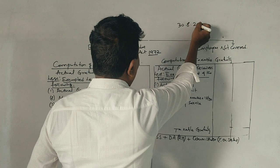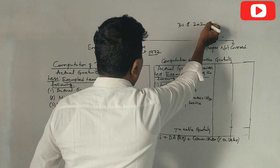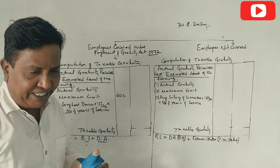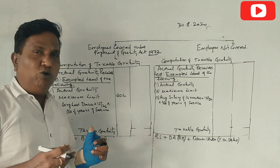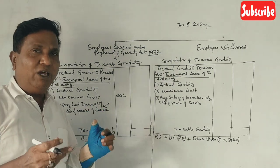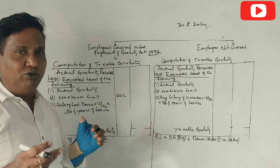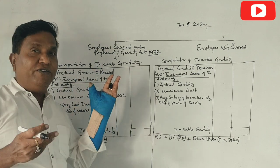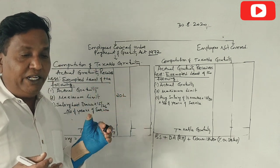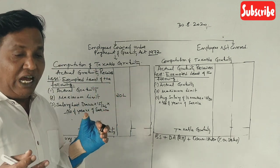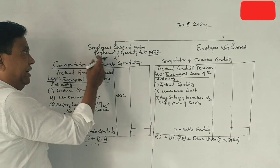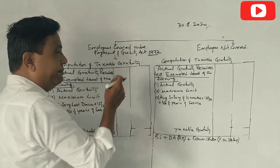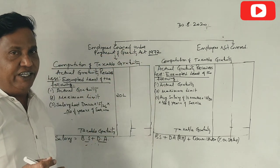The previous year of retirement is August 2020, and he received 14,00,000 as gratuity. The employee is covered under the Payment of Gratuity Act of 1972.